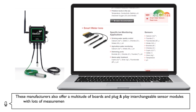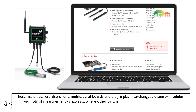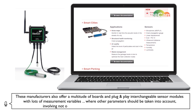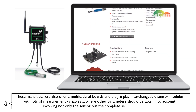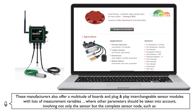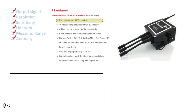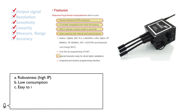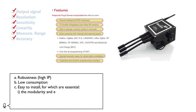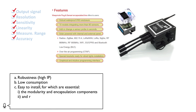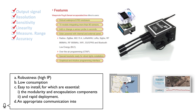These manufacturers also offer a multitude of boards and plug-and-play interchangeable sensor modules with many measurement variables, where additional parameters beyond just the sensor must be taken into account for the complete sensor node: robustness and high IP rating, low power consumption, easy installation — for which modularity, encapsulation, and rapid deployment are essential — and an appropriate communication interface with the cloud software.